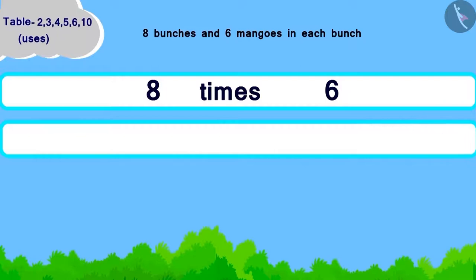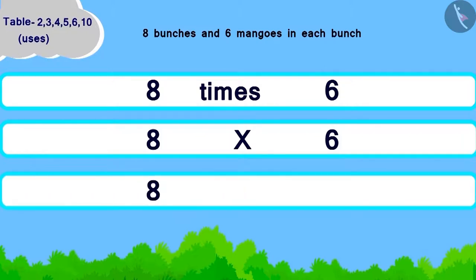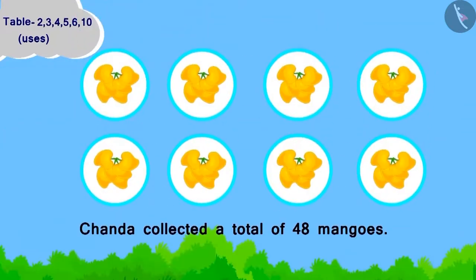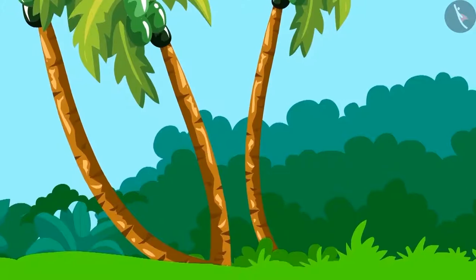Now, how will we write it as multiplication? Eight multiplied by six. Now, using the table of six, they become forty-eight. Chanda collected a total of forty-eight mangoes.